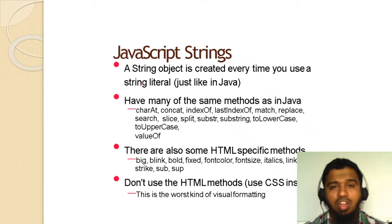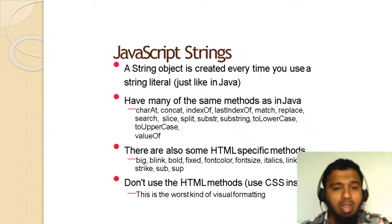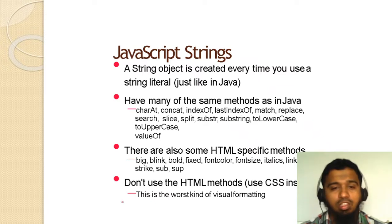What is a String? A String object is created every time you use a string literal, just like in Java. It has many of the same methods as Java — like charAt, concat, indexOf, and substring. There are also some HTML-specific methods like big, blink, bold, fixed, fontcolor, fontsize, italic, link, small, strike, sub, and superscript.